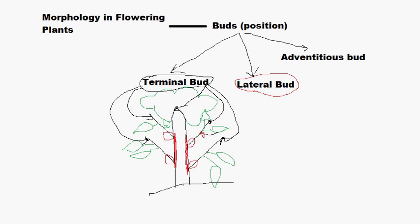Now let's talk about adventitious buds. Adventitious buds are not only present in the nodal areas — they can arise from anywhere in the plant. They can arise from the roots, from the shoot (that means the main stem or any of its branches), or they can arise from the leaf also. So adventitious buds can arise from three parts of the plant.